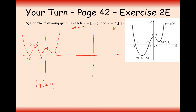Now for f(|x|): we take a copy of the right-hand side. There are coordinates at (3, something) and (2, 1), and we reflect these over to the left-hand side. So the graph mirrors across, and the coordinate at (2, 1) on the right becomes (−2, 1) on the left.